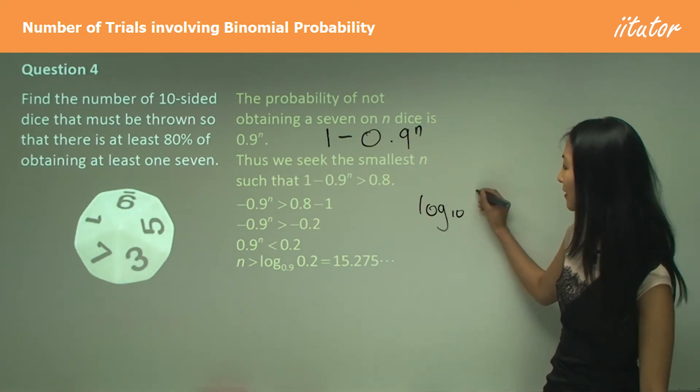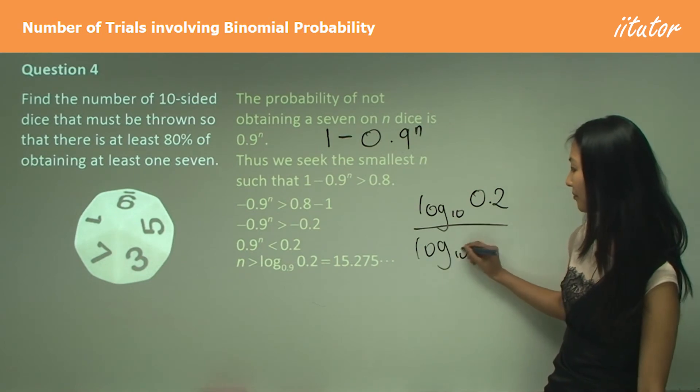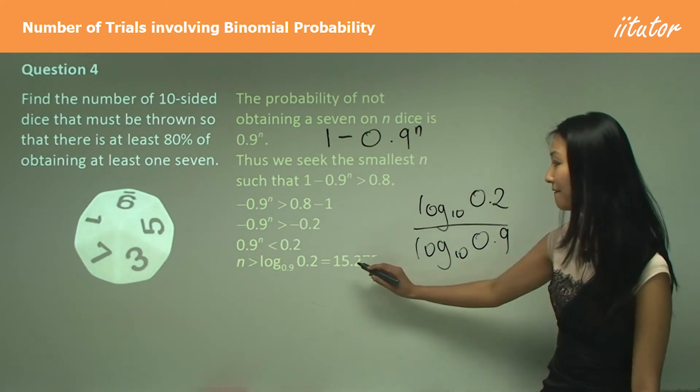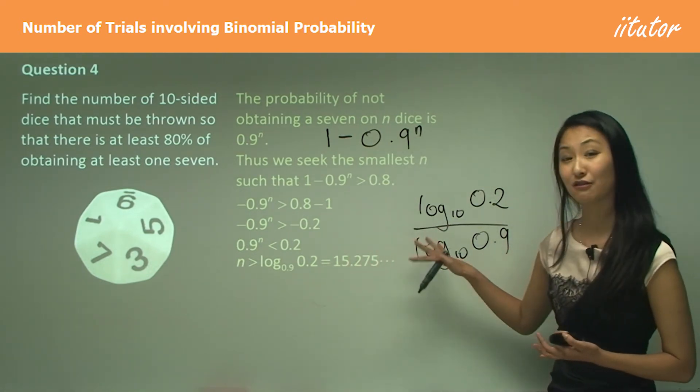Now we change the base on log base 10: log base 10 of 0.2 over log base 10 of 0.9. This is what you put into your calculator, and you should get 15.275 and so on. So n must be greater than that.